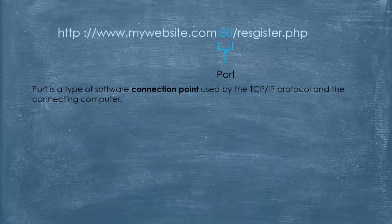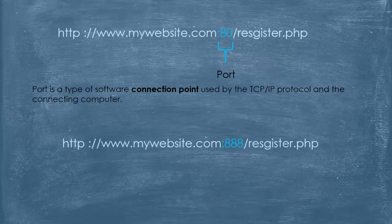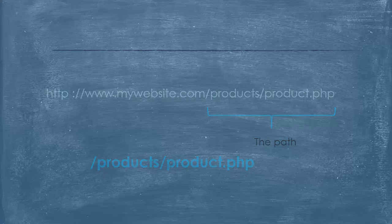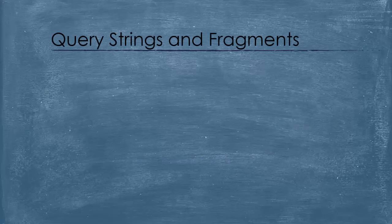If we want to connect to the server via a different port, we should specify that — for example, in this case we are trying to connect through port 888. The next part of the URL is the path, and it is optional. This is a familiar concept to anyone who has ever used a computer file system. It looks like this, and it is a way to locate the resource on the server.